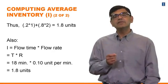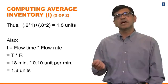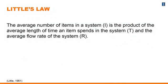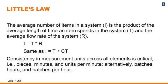Little's Law is basically: inventory in a system is the product of the flow time times the flow rate. More formally stated, the average number of items in a system is the product of the time that the item spends in the system and the average flow rate: I equals T times R. You can also express it as I equals T divided by the cycle time, since flow rate and cycle time are reciprocals of each other.